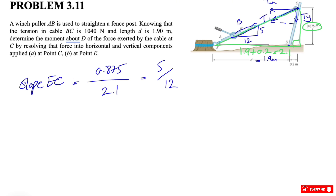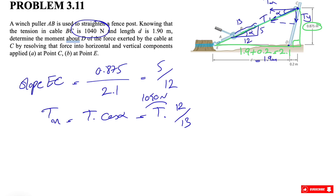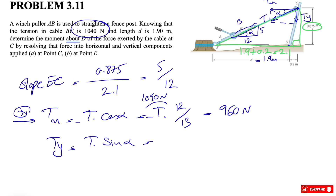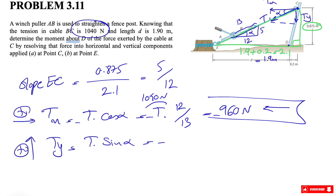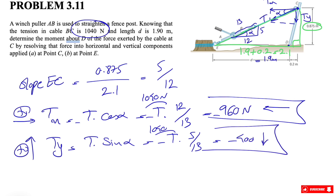Now that we have the slope we can find Tx and Ty. Calling this angle alpha, Tx equals T times cosine of alpha, where cosine alpha is 12 over 13. With T equal to 1040 newtons, Tx equals 960 newtons. Similarly, Ty equals T times sine of alpha, where sine alpha is 5 over 13. Taking rightward and upward as positive, Ty is minus 1040 times 5/13, giving minus 400 newtons — directed downward.